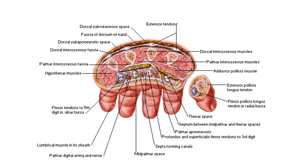This cross-sectional picture shows the area occupied by the mid palmar space and the thenar space. The brown shading represents the mid palmar space. Anteriorly it is related to the long flexor tendons and lumbricals, whereas posteriorly it is related to the metacarpals and interosseous muscles. The thenar space is related anteriorly to the thenar muscles and posteriorly to the adductor pollicis of the thumb.